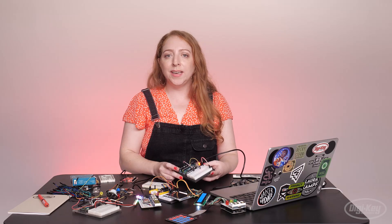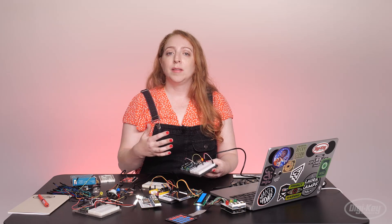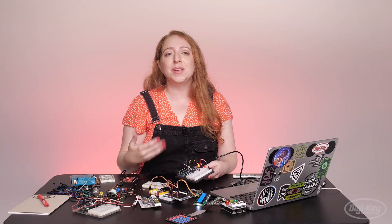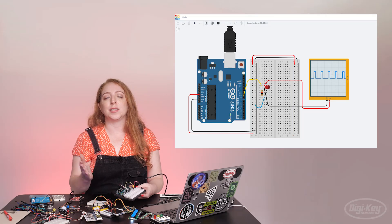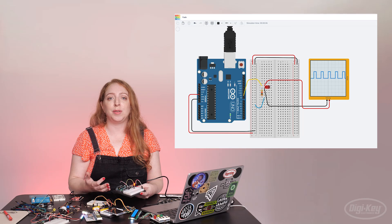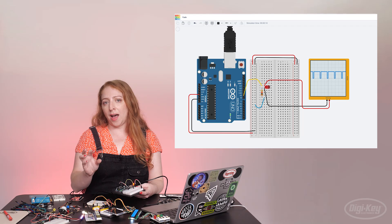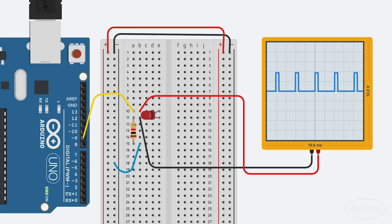The Arduino board is only capable of generating digital signals, high and low, but analogWrite simulates the appearance of brightnesses between on and off using pulse width modulation, or PWM. The LED flashes on and off very quickly, and your eye interprets a dimmer light. The ratio of time the LED spends on versus off determines how bright or dim the LED appears.